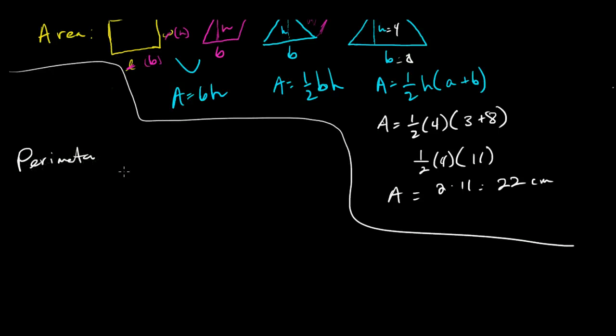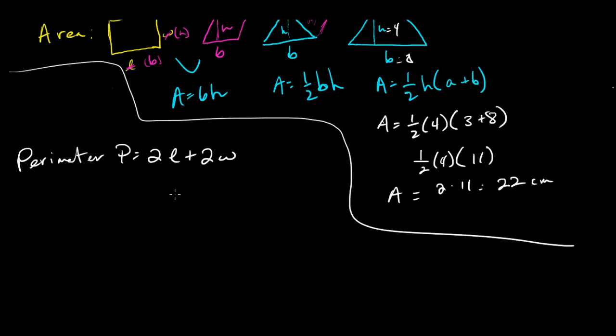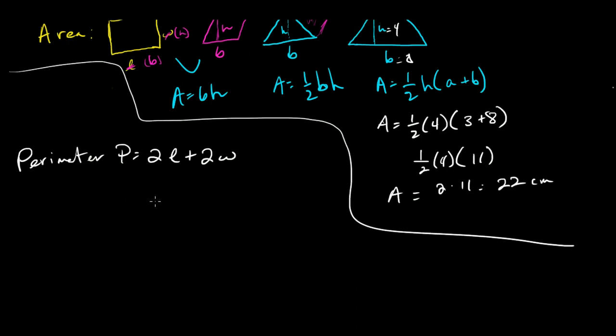Which would be in the case of this rectangle, the perimeter of a rectangle is 2 times the length plus 2 times the width. So if I knew the length and the width, I can then evaluate it to find the perimeter.